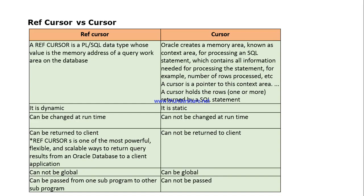A reference cursor is like a pointer, similar to pointers in other programming languages. Just as a pointer holds the address of a variable, a reference cursor holds the address of a cursor — that is, the context area or temporary area created by Oracle for storing the result of a SQL statement. The definition of a reference cursor is: it is a PL/SQL data type whose value is the memory address of a query work area on the database.